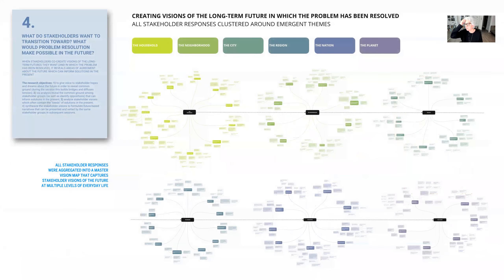In the fourth step of data gathering, stakeholder teams told us what the long-term future would be like for their group if the problem of a lack of funding for minority entrepreneurs were resolved. They told us what would be possible that isn't possible now and how their everyday lives might have changed for the better. Groups envisioned the future at five different systems levels: the household,